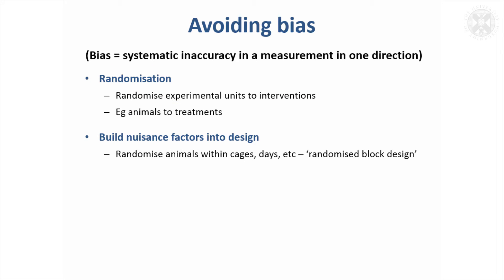Sometimes there are nuisance factors that we're not really interested in analysing or drawing conclusions about — such as cage or the days on which the experiment was done — and it's sometimes possible to build that into the design using something called a randomised block design, though the title isn't really very helpful.